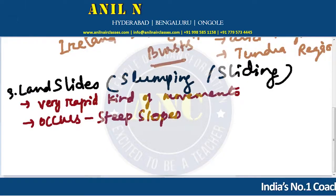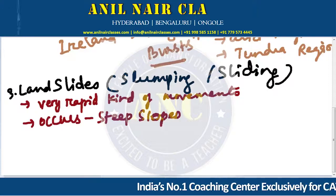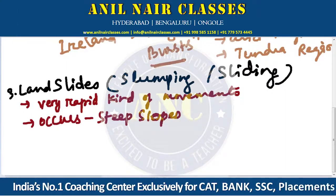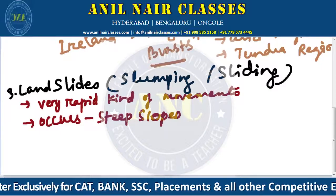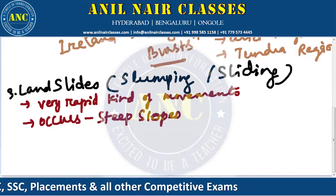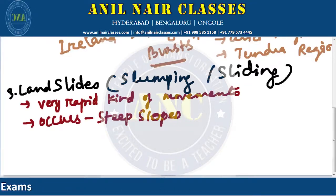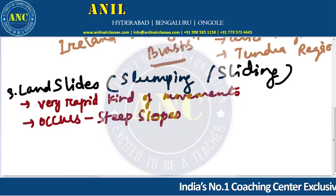Weak, and because of that weakness, what happened? It falls down at one time, it falls down. So that is all about the mass movement on the three cases. I hope this is understood. Is that clear? Okay, so this was all about mass movement.